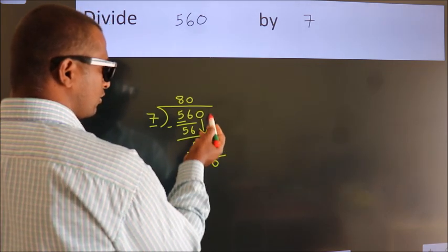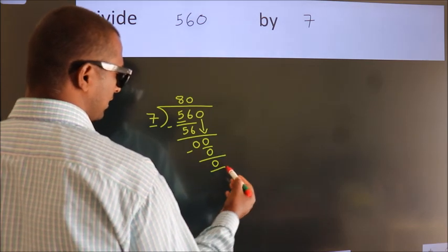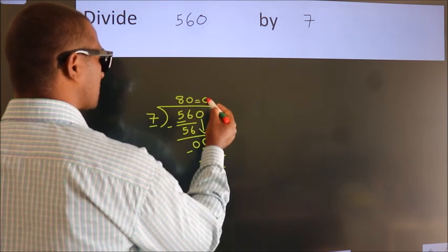After this, no more numbers to bring down. We got remainder 0. So this is our quotient.